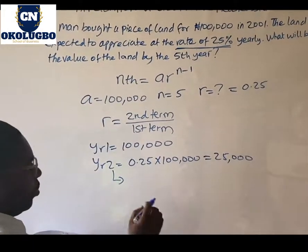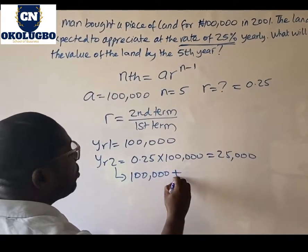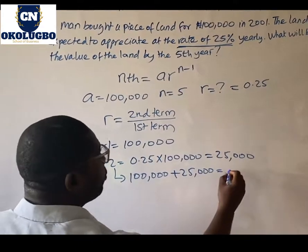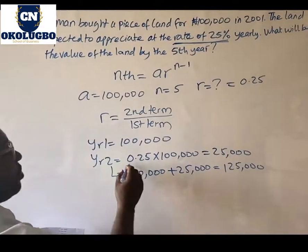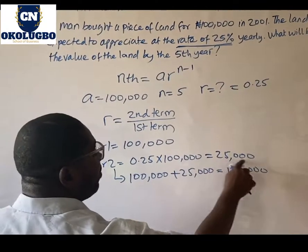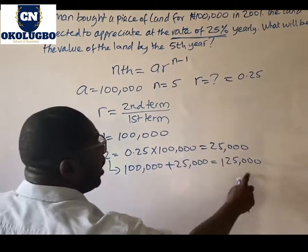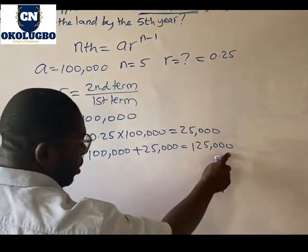So year 2 will be 100,000 plus 25,000. This will give us 125,000. So this is the rate of increase - 25,000 plus 100,000 will give us the value of the land in the 2nd year.